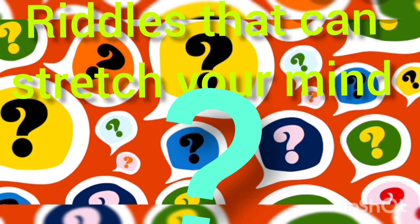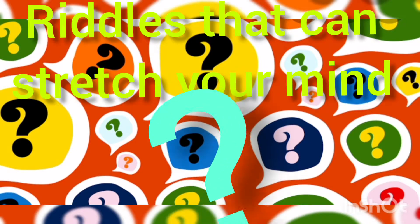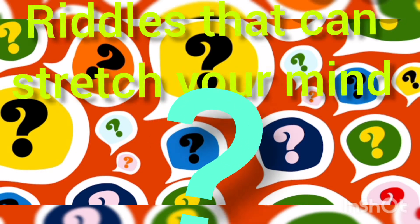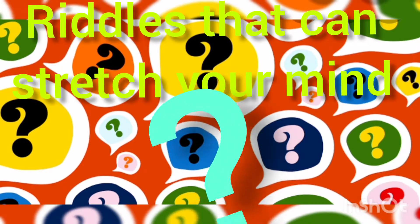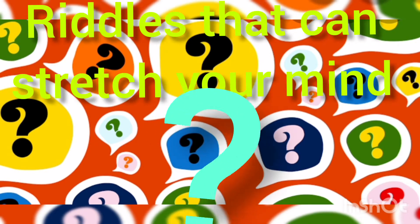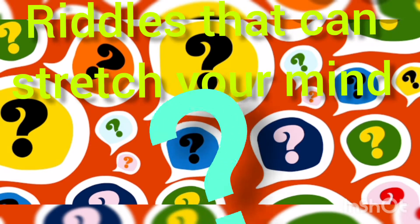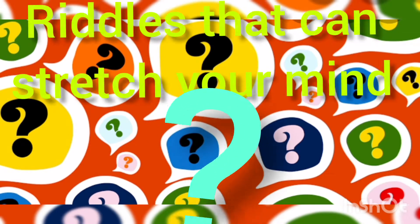There is only one word in the dictionary that is spelled wrong. What is it? There is one word in the dictionary that is spelled wrong, but all the words in the dictionary are spelled correct. What could be the answer?